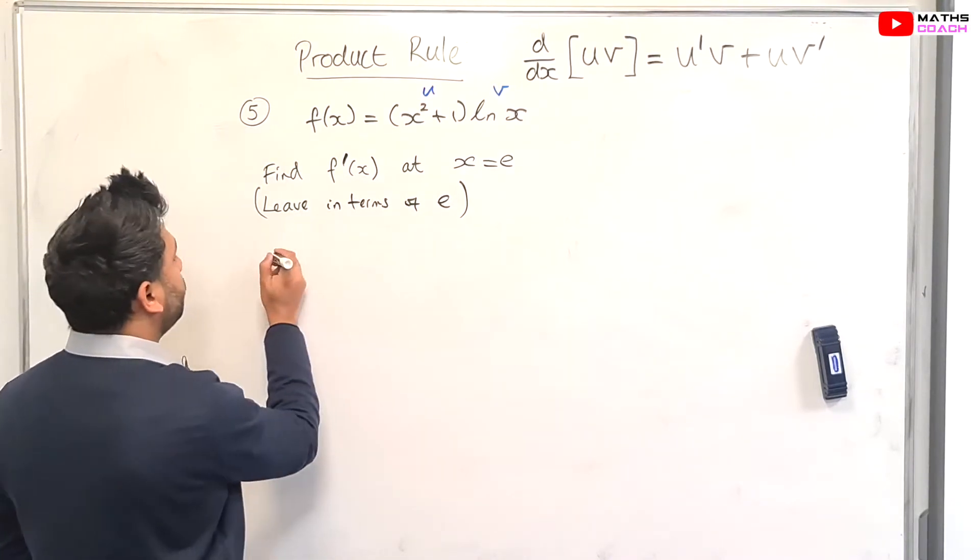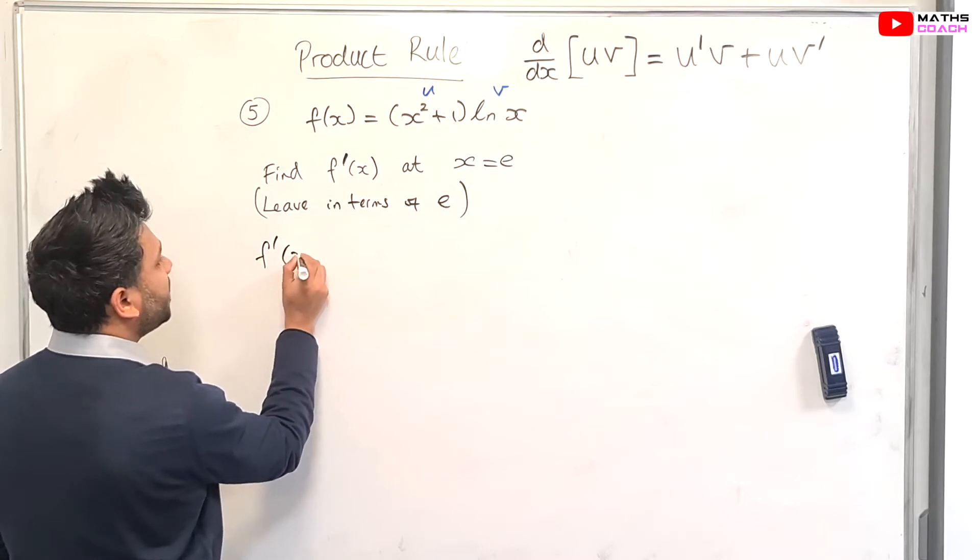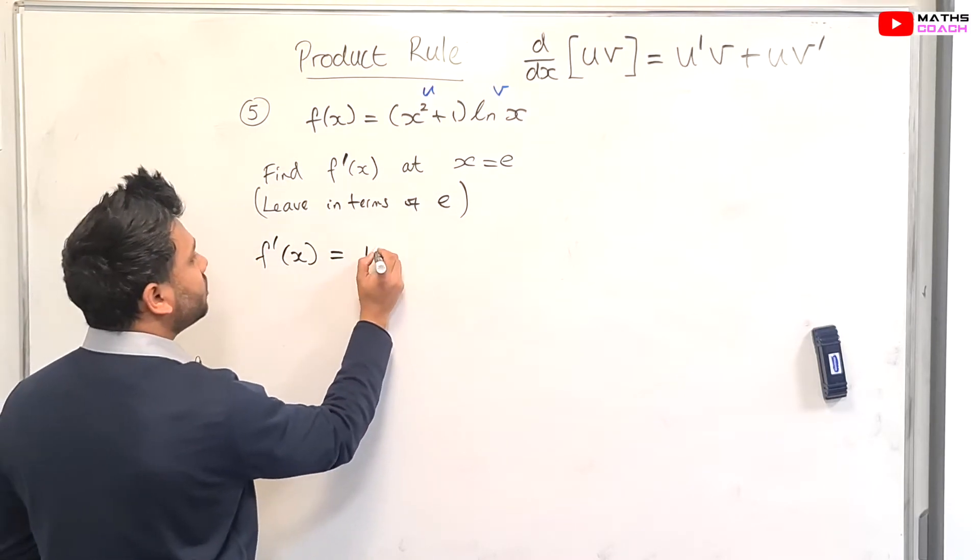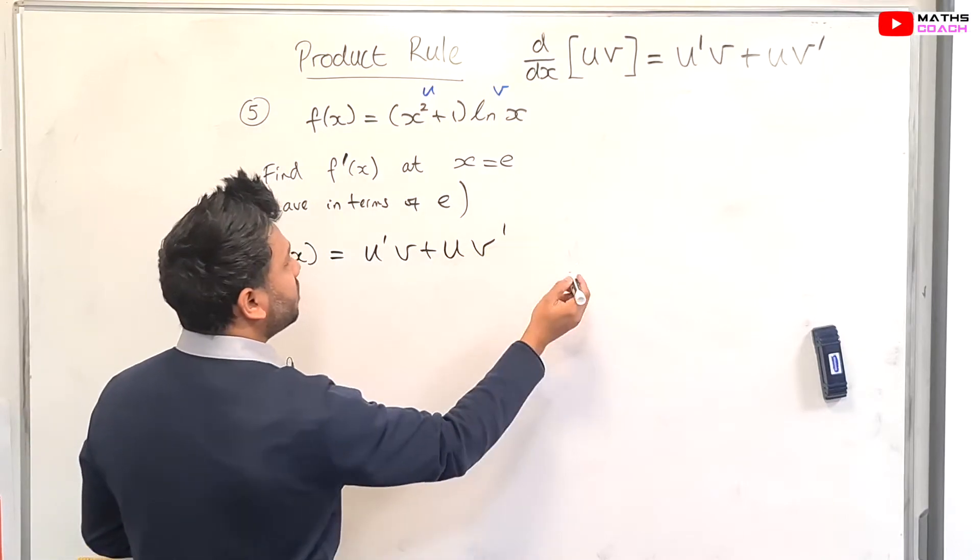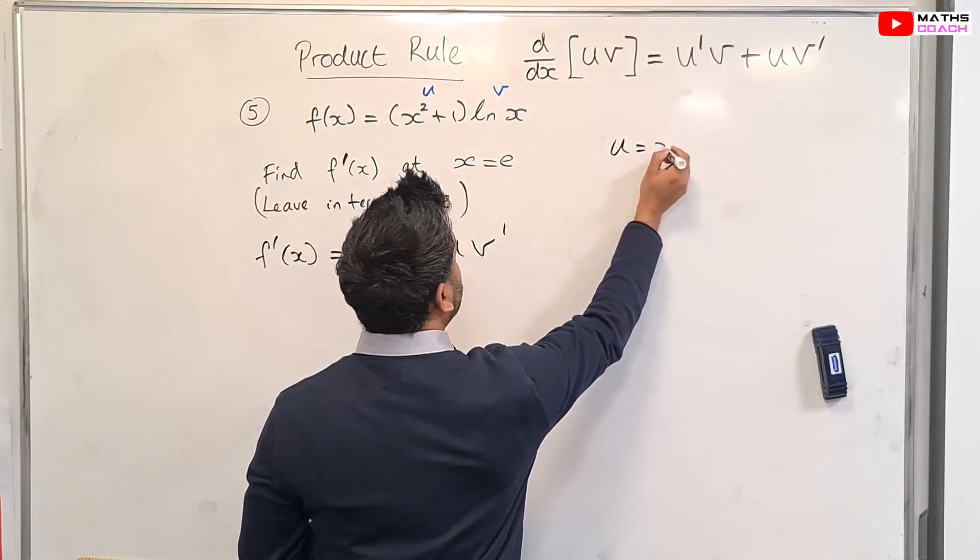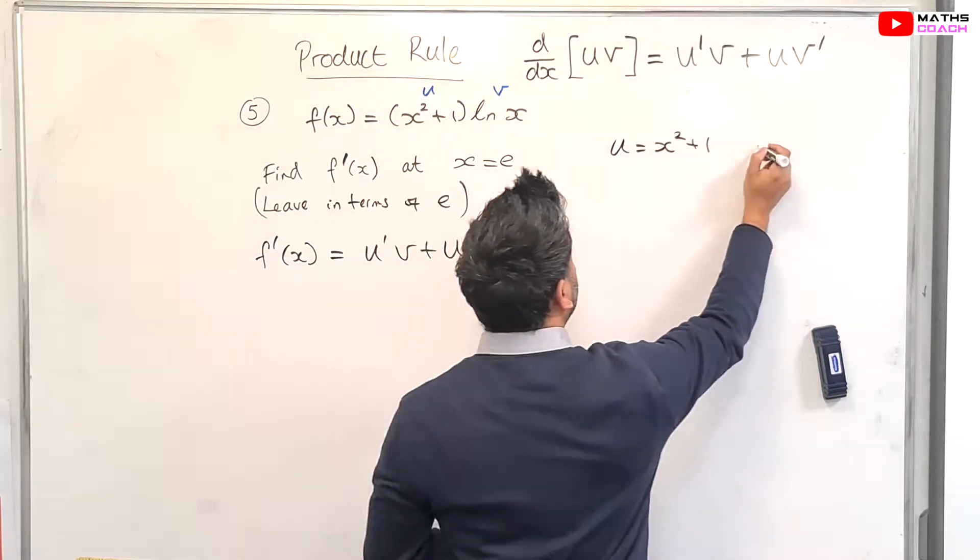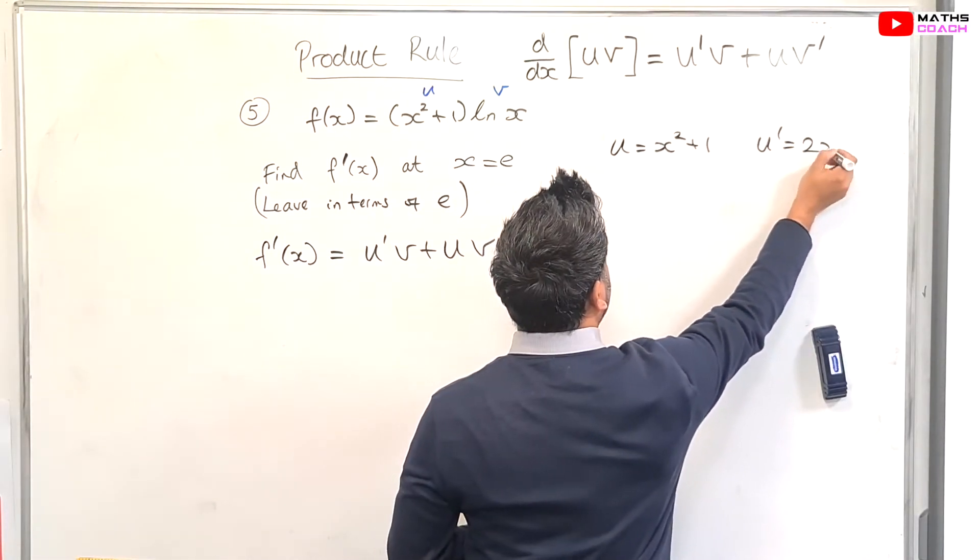Okay, so let's begin by the formula for f'(x), or dy/dx is equal to u'v + uv'. So we have u as x squared plus 1, u' is therefore going to be 2x.